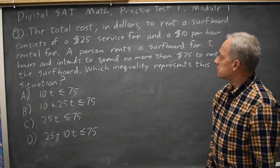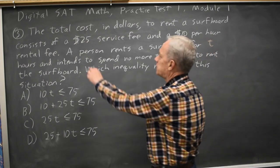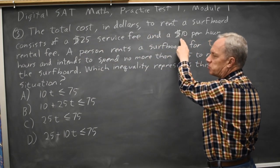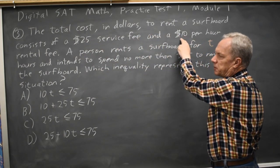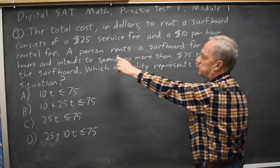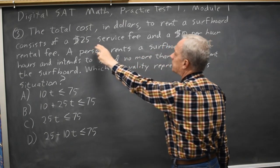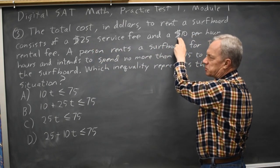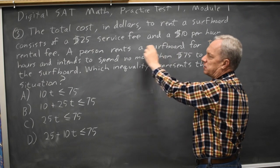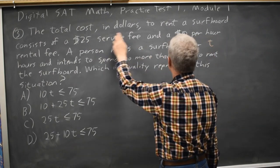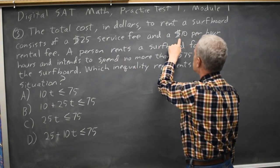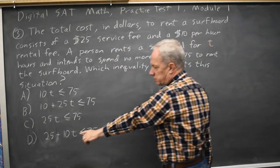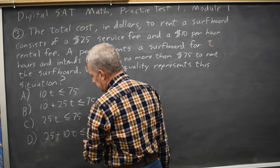Since the service fee is fixed, the $10 per hour is multiplied by the number of hours. It should be your service fee plus the cost per hour times the number of hours — so 25 plus 10 times t. That would be choice D.